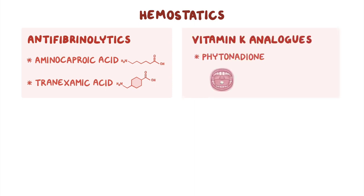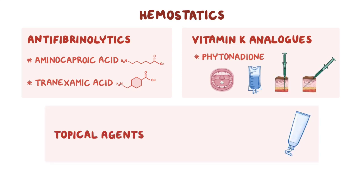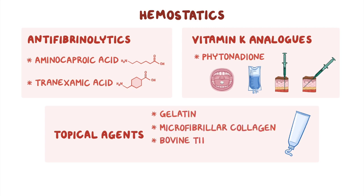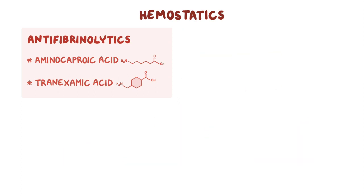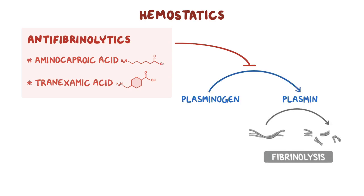Phytonadione can be administered orally, intravenously, intramuscularly, or subcutaneously. Topical hemostatic agents such as gelatin, microfibrillar collagen, bovine thrombin, and human fibrin sealant are applied topically. Anti-fibrinolytics work by inhibiting the conversion of plasminogen to plasmin, which ultimately prevents fibrinolysis.